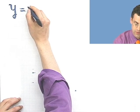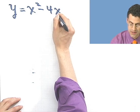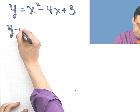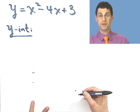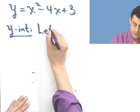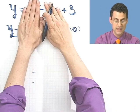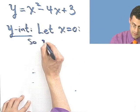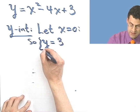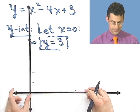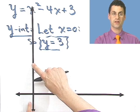Let's try another example. Suppose I look at the equation y equals x squared minus 4x plus 3. First, let me find the y-intercept. To find the y-intercept, I let x be 0. If I let x be 0, both the x-squared and the 4x terms go away, and y is just 3. So the curve crosses the y-axis at 3.